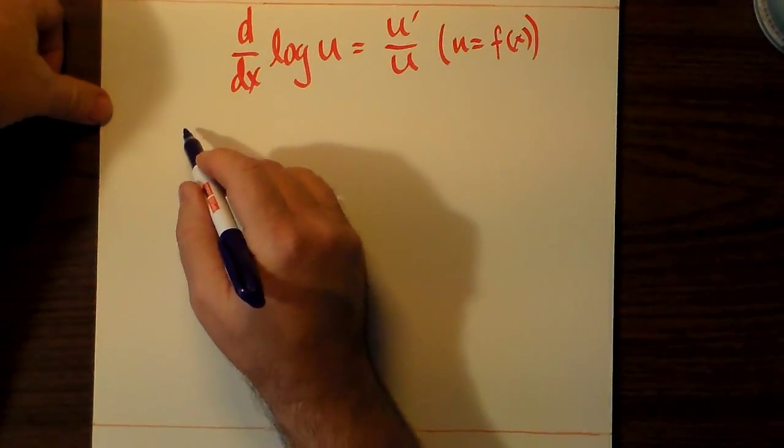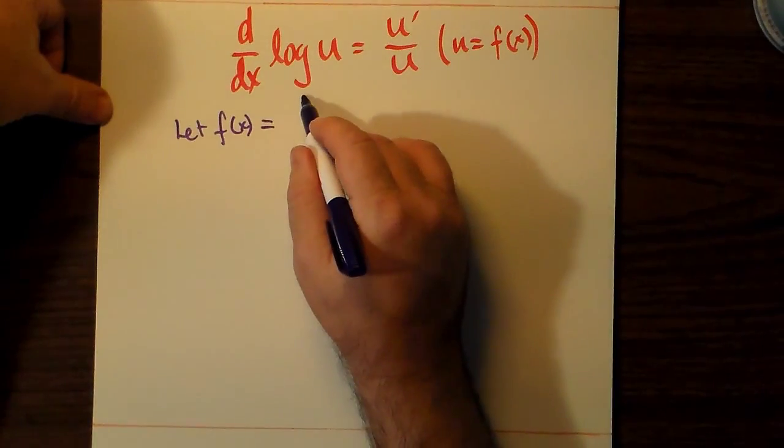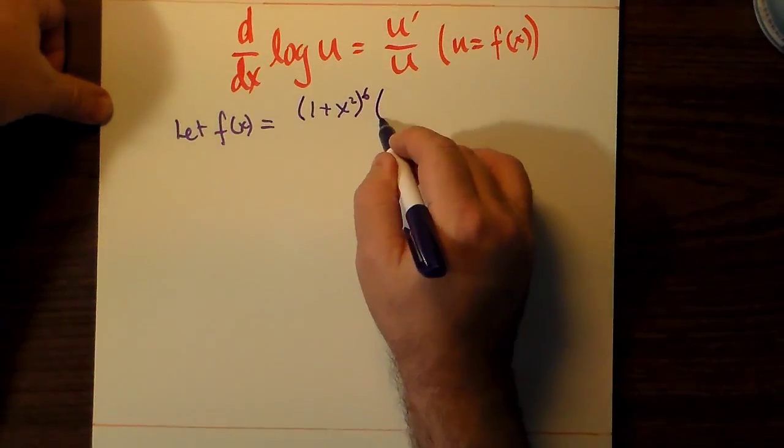All right, so you have a function u, which is a function of x, and the log of u, if we take its derivative, is u prime over u.